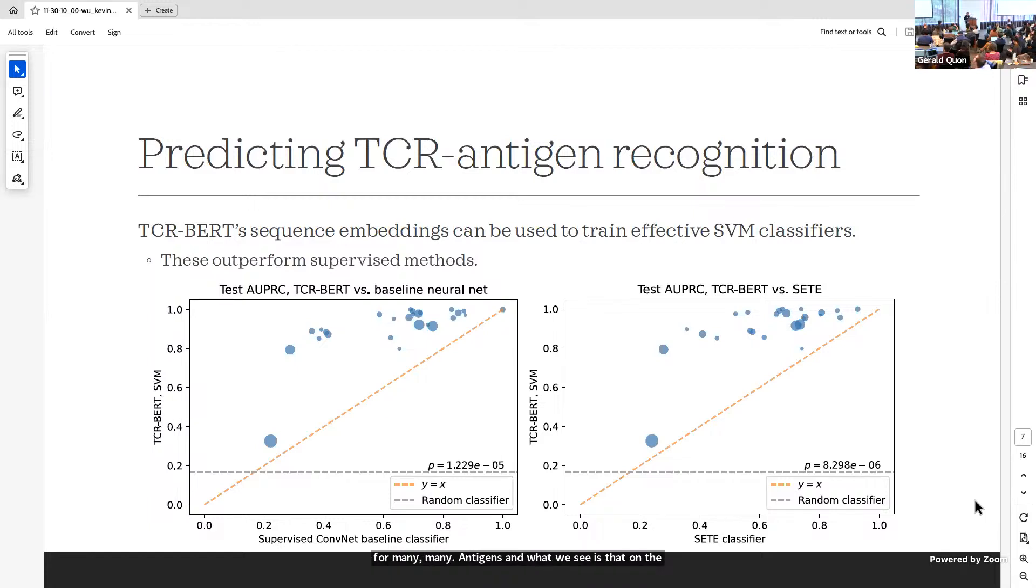What we see is that on the left-hand side, on the y-axis, we have TCR-BERT's performance. This is done by simply taking the TCR-BERT model, freezing the model, taking embeddings out, and training an SVM on top of it. On the x-axis, we're comparing against two different supervised baselines, a convolutional baseline on the left and a K-mer-based baseline on the right. In both cases, the performance of our TCR-BERT model exceeds that of the supervised models in every single antigen that we evaluate in this cross-validation fashion.